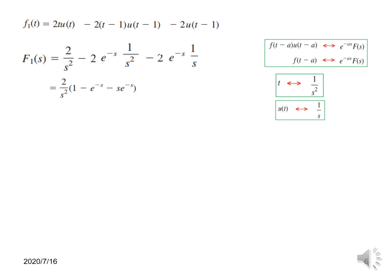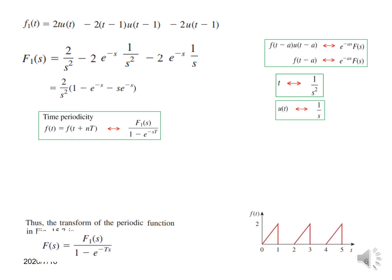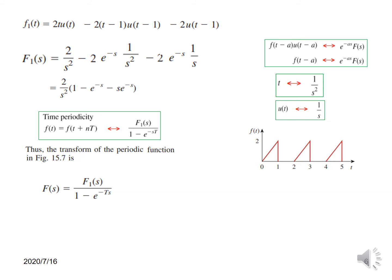Taking these together we get F1(s) — the transform of the first period. But we need the transform of the complete periodic signal, so we use the time-periodicity property: if f(t) is periodic with period T, then F(s) = F1(s) / (1 − e^(−sT)). Since T=2, we plug in T=2, substitute F1(s) with what we found, rearrange, and this is the final answer for this question.